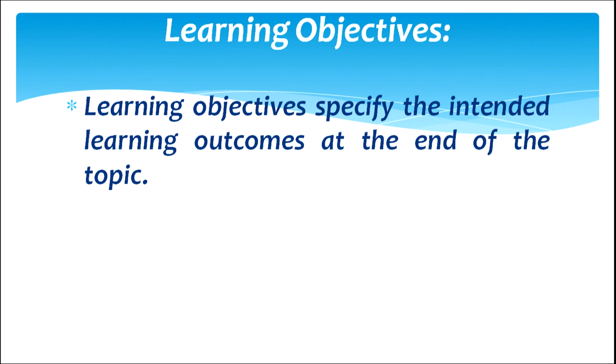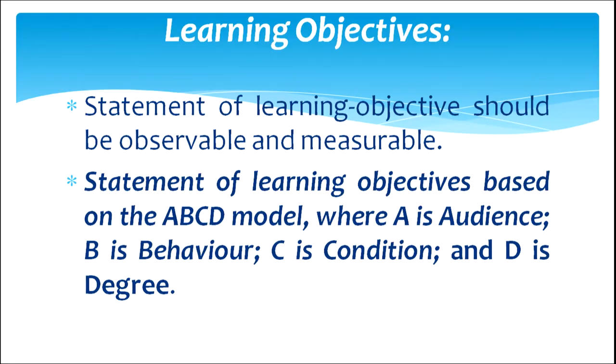Then come learning objectives, which specify the intended learning outcomes at the end of the topic. Remember, we are using ICT but our final objective is to ensure effective learning. Learning objectives written by the teacher should be observable and measurable. We can use the ABCD model, where A is the audience, B is the behaviour, C is the condition, and D is the degree — all four components should be mentioned in the statement of learning objectives.